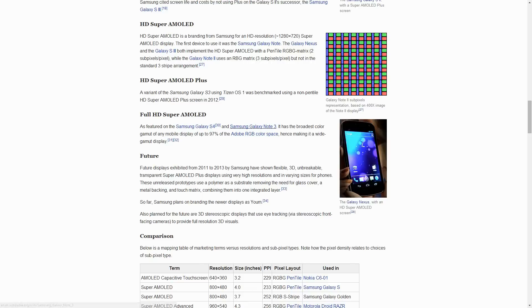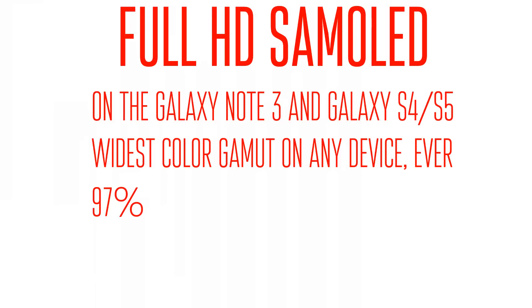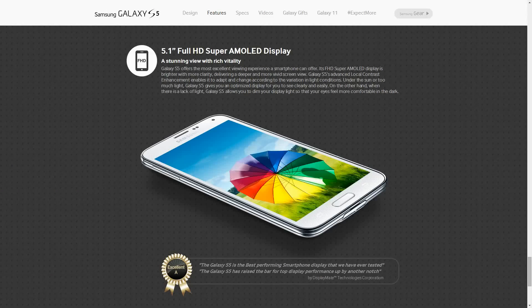What a color gamut pretty much means is it is how much of the wide spectrum of colors our eyes can see that the display can reproduce. The Full HD Super AMOLED screens in the Note 3 and the S5 have a 97% color gamut, so they can pretty much show everything. This is why, even on the Galaxy S5 website, they specifically say 'more vivid screen,' because these screens are ridiculously vivid and oversaturated because of those individual diodes.